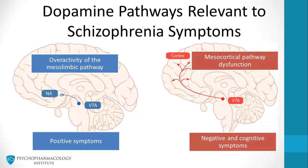So, in review, an excessive activation of the dopamine mesolimbic pathway is related to positive symptoms, while negative and cognitive symptoms might be caused by mesocortical dysfunction.